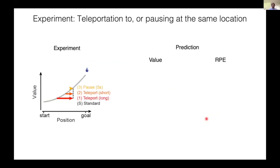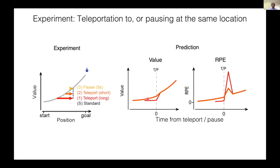In the first experiment, we introduced three conditions: a long teleport, short teleport, and pausing at the same location. The value will show a step-like increase, whereas TD error will exhibit a transient response. The magnitude of these responses will be larger for long than short teleport. When the animal pauses for a short period, value will stay constant, whereas TD error may decrease back to the baseline since there is no change of value in time.